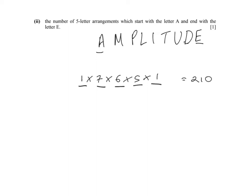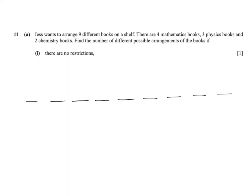So there are 210 ways to make five-letter arrangements starting with A and ending with E. Here's another example of a permutations question. We can tell it's a permutations question by seeing the word arrangements.